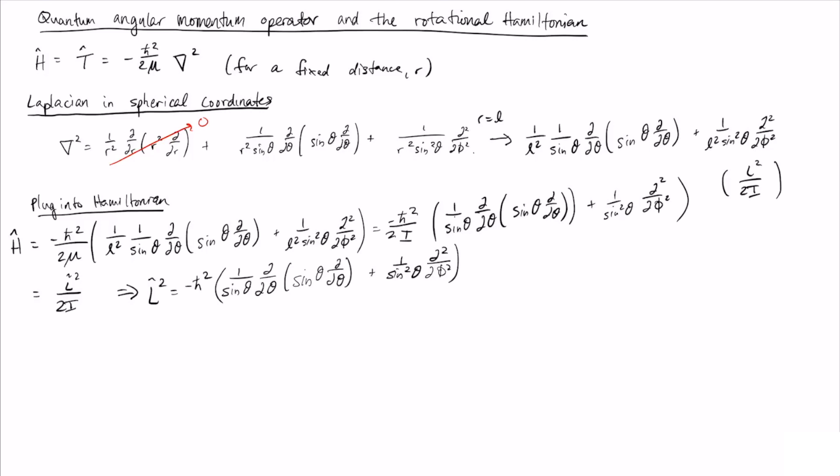This might seem a little weird, because what we're doing is defining the quantum mechanical operator for L² before we've talked about what the quantum mechanical version of L is. But the reason for that is just that L² is a little bit simpler. L is actually a vector, and the components of the vector are x, y, and z components of the angular momentum.